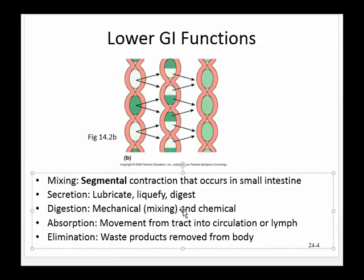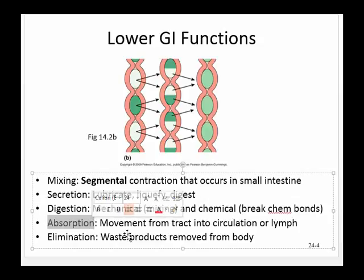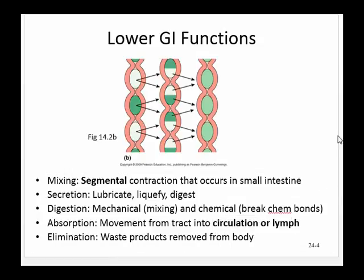Chemical breakdown actually breaks the chemical bonds within food, and that's how we can extract nutrients. Absorption, which is pretty important, primarily happens in our small intestine and moves nutrients from the digestive tract into our bloodstream so we can use them for the rest of our body. Elimination involves eliminating food from the rectum and anus - anything that we don't absorb will be eliminated.